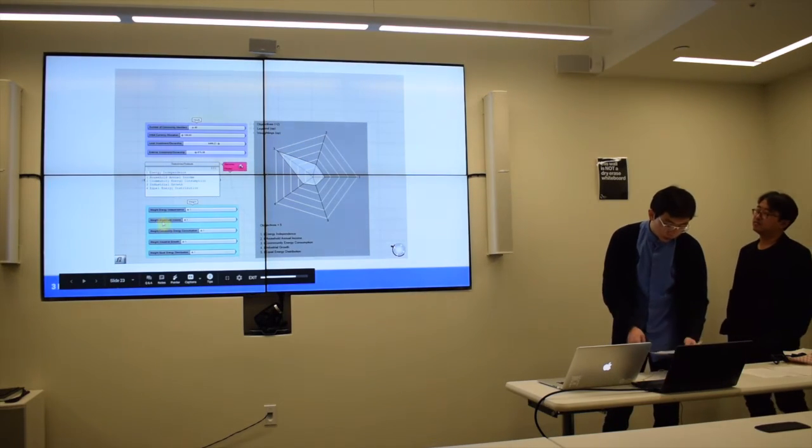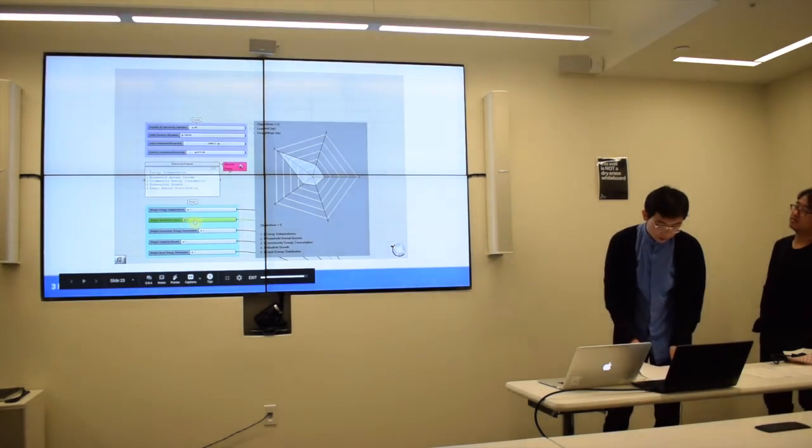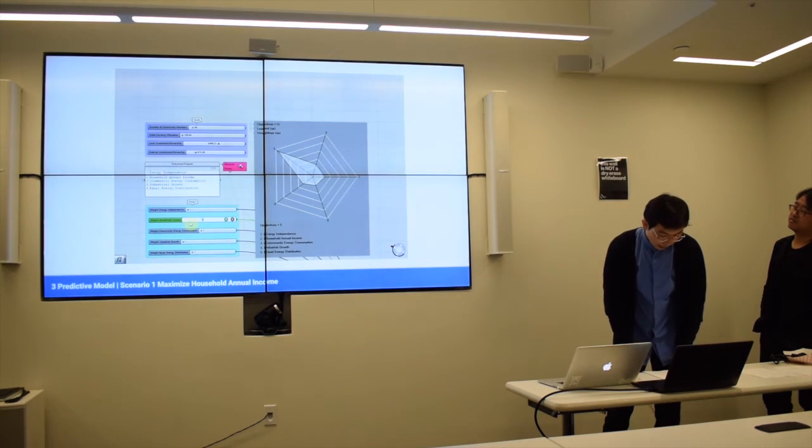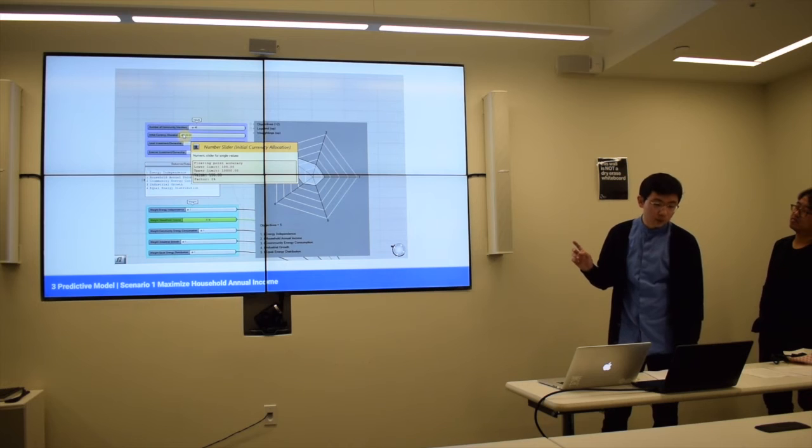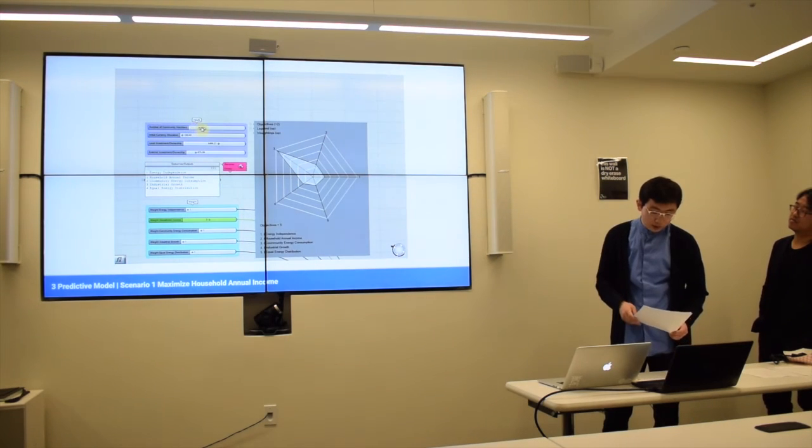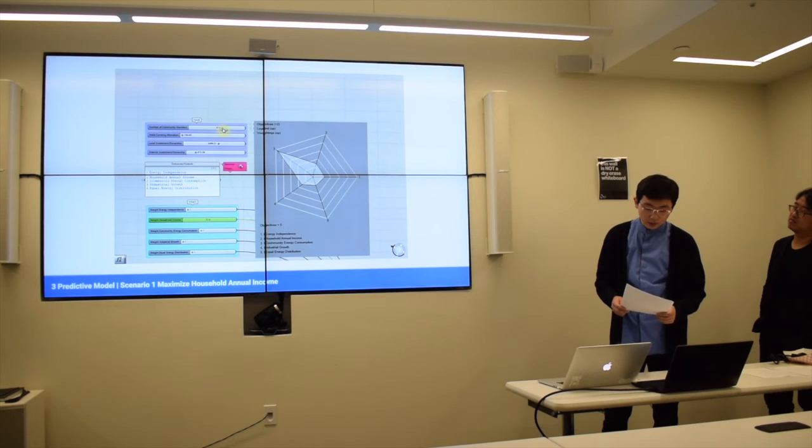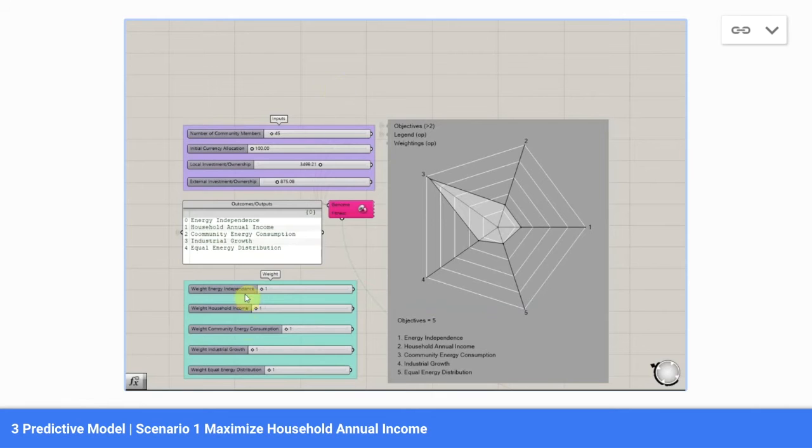We really want to democratize this decision-making expertise. So, this is an example that, for example, you want to maximize household annual income, which is number two in the objectives. You just want to score higher on number two. You can see some factors are less relevant.